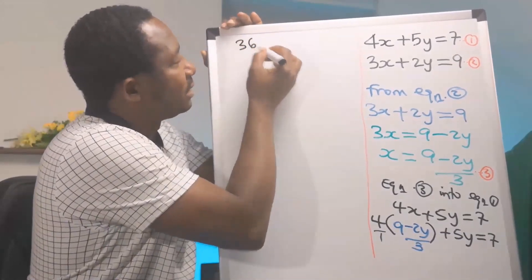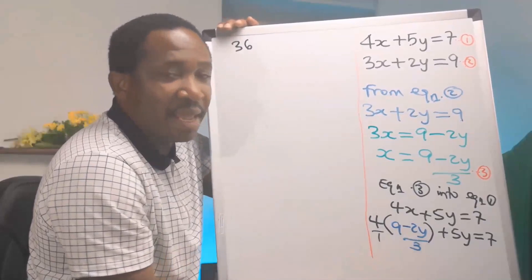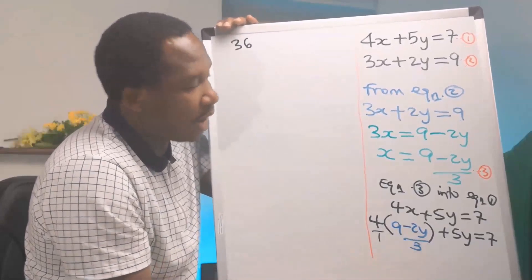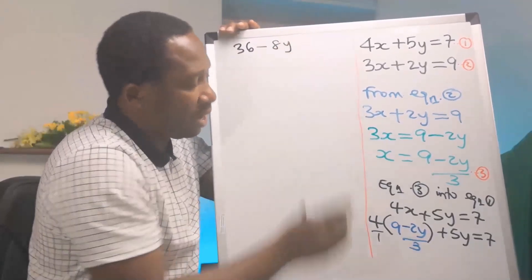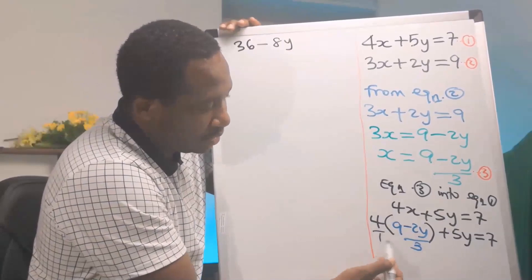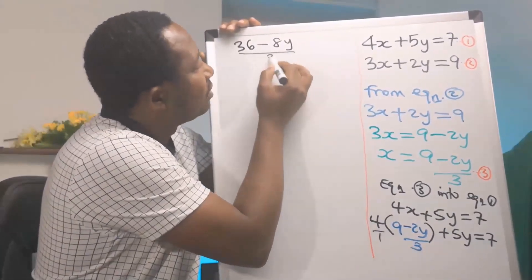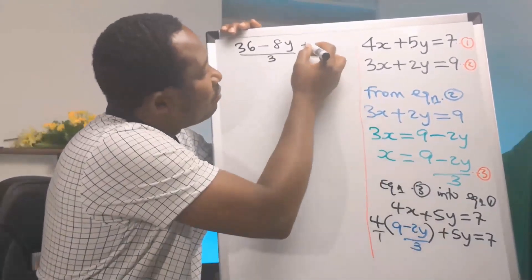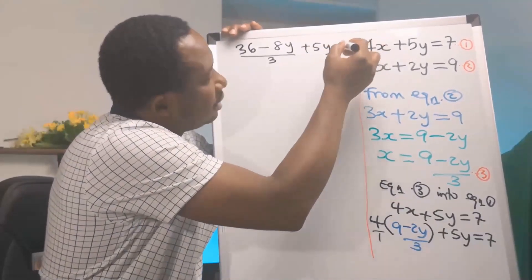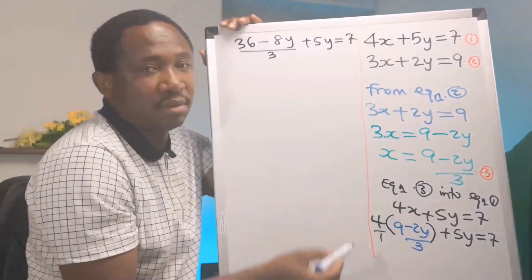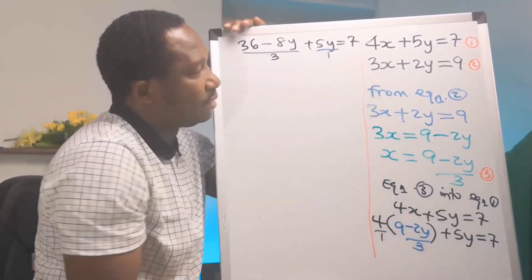Next, 4 will multiply 9 to give 36, and 4 will multiply minus 2y to give minus 8y, all over 3. Then we have plus 5y over 1, equals 7.